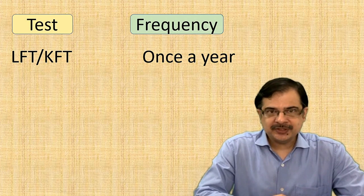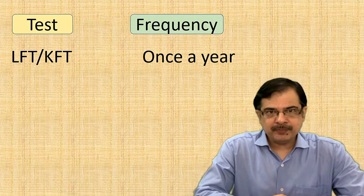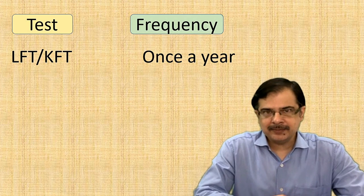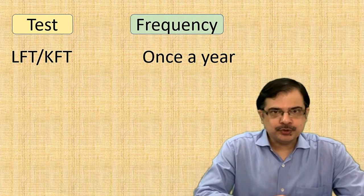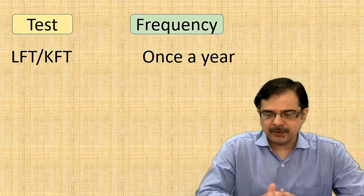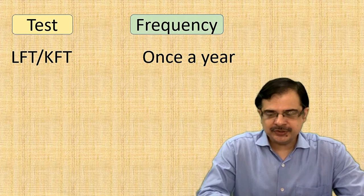Kidney function test, like blood test for creatinine and urea, are also important because if creatinine is high then common medication for diabetes should not be given or should be given in a reduced dose, like metformin. It should be done once a year, but if it is deranged then more frequently.